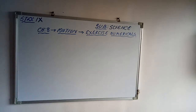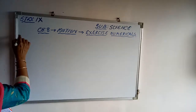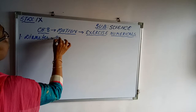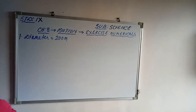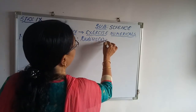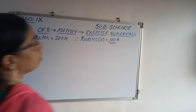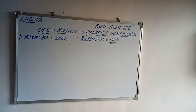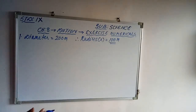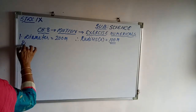First, let us write what is given. The diameter of the circular track is given as 200 meters. As the diameter is given, we can find out the radius — half of the diameter — that is 100 meters. The time taken to complete one round is 40 seconds. So we can write: rounds completed in 40 seconds is 1 round.